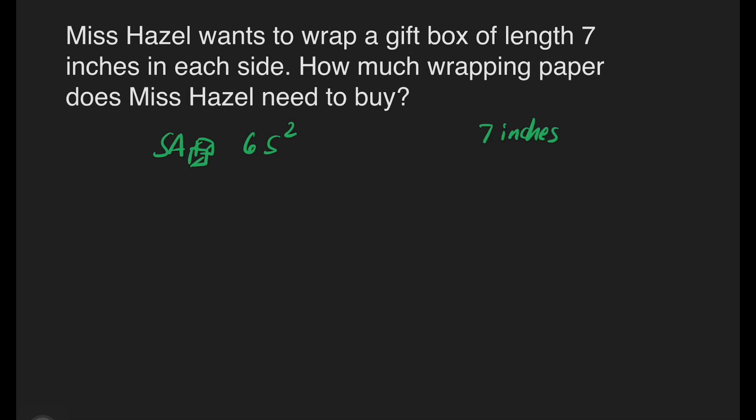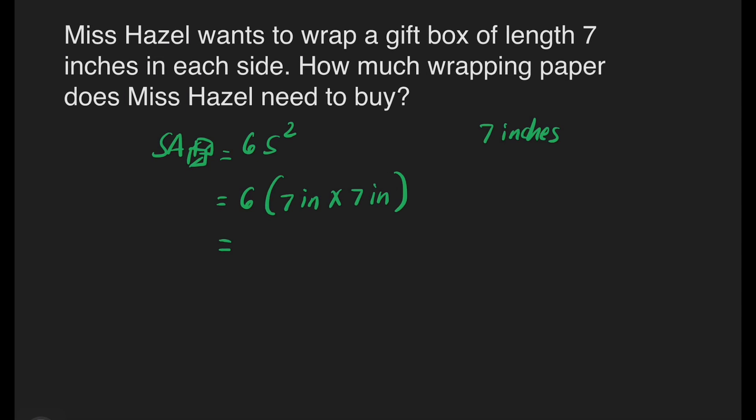So, all we need to do is to just multiply 6 faces to 7 inches by 7 inches because we have one side of 7 inches. Next, we will multiply first 7 times 7. That's going to be 7 times 7 is equal to 49 inches squared.